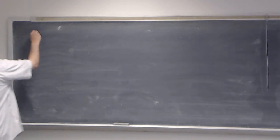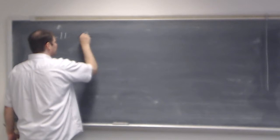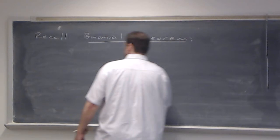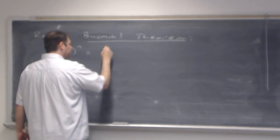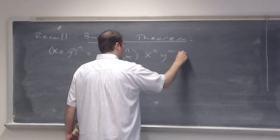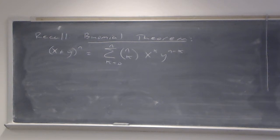I want to recall — or possibly introduce — the Binomial Theorem: (x + y)^n, where n is an integer, equals the sum as k runs from 0 to n of C(n, k) · x^k · y^(n−k). This fact can be proven by induction, though I won't prove it here.